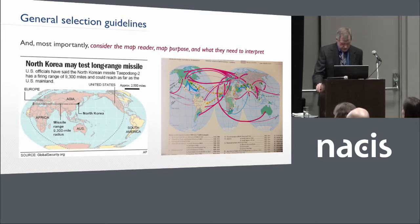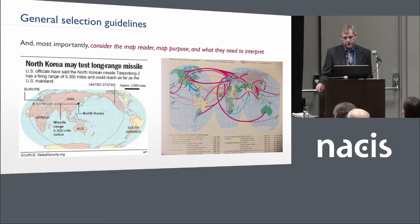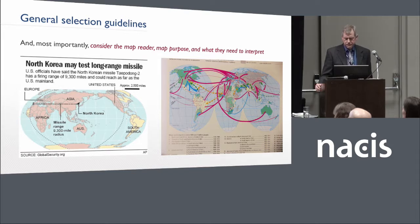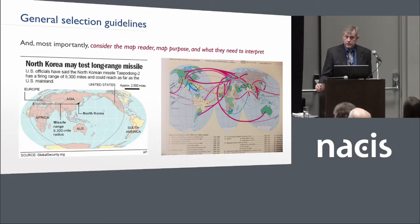Most importantly, we think that the map reader, the map purpose, and what the map reader needs to interpret is a big factor. We see on the left a pseudo-cylindrical projection showing the range of a missile, shown rather inappropriately. On the right, we have a flow map that is being displayed on an interrupted projection. We would like for those choices not to be made, at a minimum.